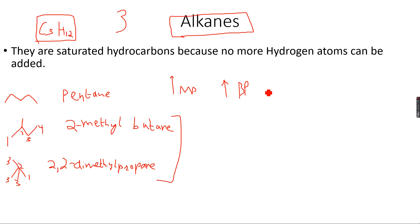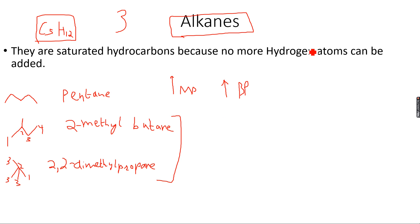We use fractional distillation to separate these different alkanes. Because of their close packing, number of electrons, and number of carbon atoms, each hydrocarbon has a different boiling point, and these different boiling points allow them to be easily separated by fractional distillation.